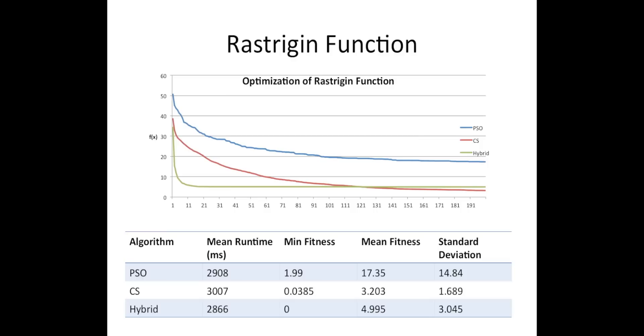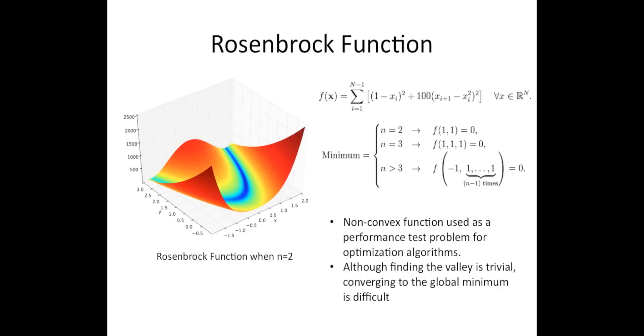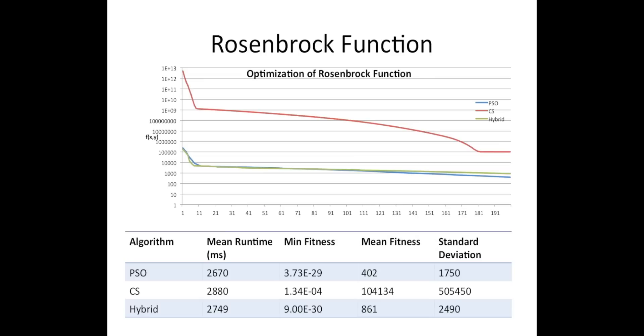Here, you can see how the hybrid in green converges very quickly, yet over time the Cuckoo Search is able to find a better solution on average. The same is not true for the Rosenbrock function. These performance data provide insight into the different properties and advantages of each algorithm.